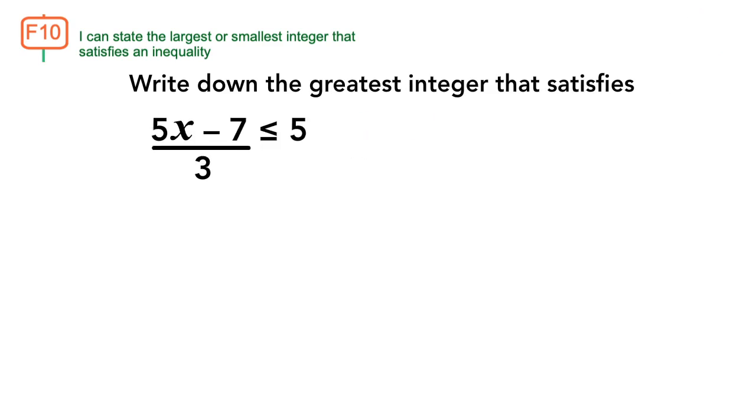Let's consider this question. Write the greatest integer that satisfies 5x minus 7 over 3 less than or equal to 5. We first multiply by 3, then add 7, then divide by 5.